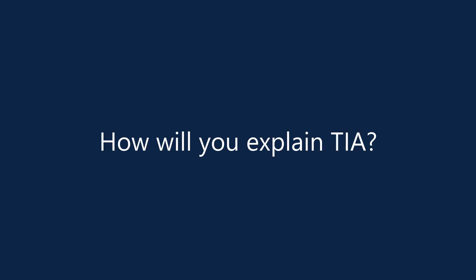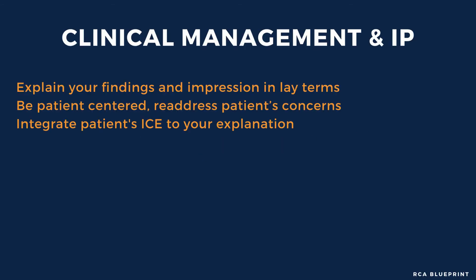If you think the patient has a TIA, how will you explain this to the patient? Your explanation needs to be simple and in layman's terms. When you explain a condition to a patient, it's useful to build on the patient's existing knowledge. If you've already done your ideas, concerns, and expectations, you may know what the patient thinks is going wrong. For example, if the patient thought they slept on the wrong side, you might say, 'I know you thought this could be due to your sleeping position, but I don't think that's the case. I think you have a TIA. What do you know about TIA?' Let the patient respond before going into your explanation.